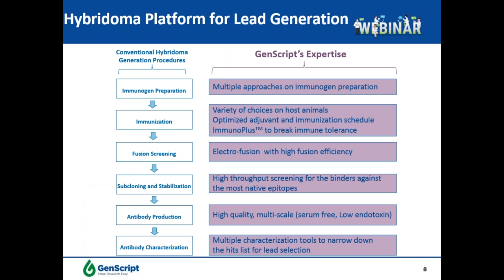Conventional hybridoma generation procedures follow immunogen preparation, animal immunization, fusion, hybridoma screening, subcloning, and antibody production. GenScript has extensive experience in all of these critical steps, from multiple approaches on immunogen preparation to a variety of host animals and optimized adjuvant and immunization schedules. We also have a high-efficiency electrofusion platform and the highest-throughput screening platforms for identifying binders against the most native epitopes. Multiple characterization tools are built in to narrow down the list for lead selection. In the last 13 years we have successfully delivered more than 10,000 antibody projects, including over 200 therapeutic antibody projects.